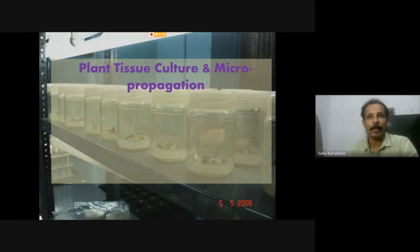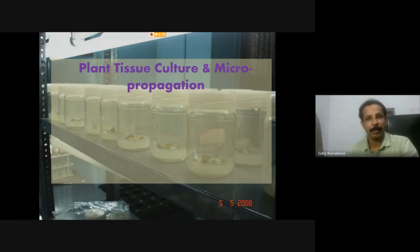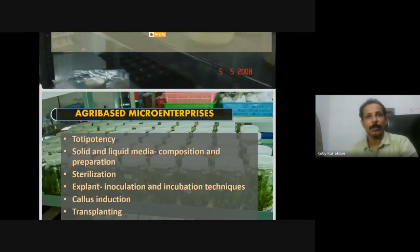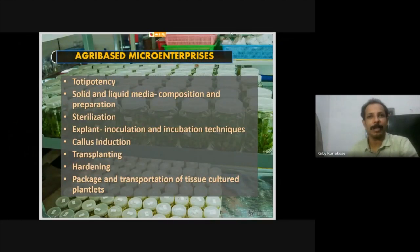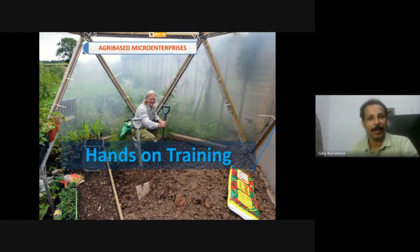The last topic is plant tissue culture and micro propagation. Nowadays even farmers are using tissue culture methods to raise plantlets. It includes technical terminologies like totipotency, sterilization, transplanting, and hardening.